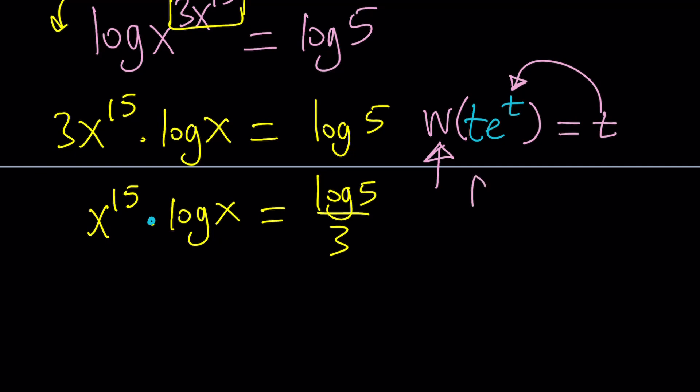In other words, it's the inverse function for t e to the t. So if f of t is t to the t, then f inverse of t would be considered Lambert's W function, or W of t.